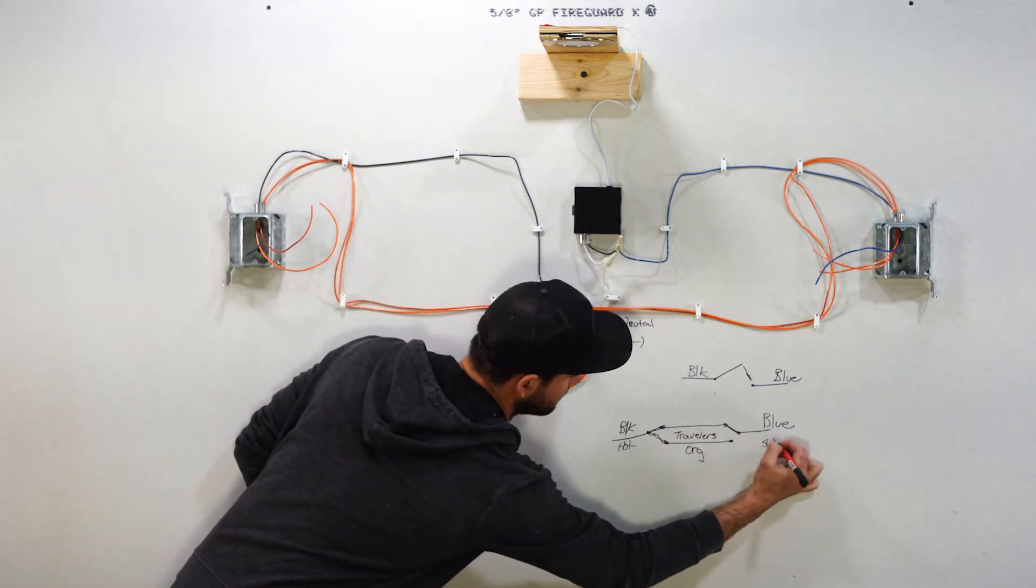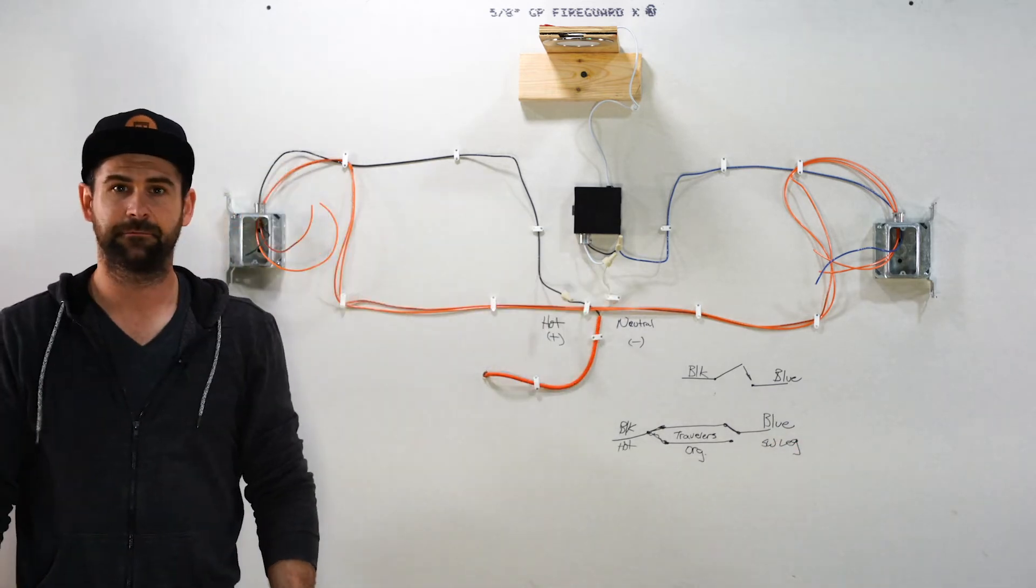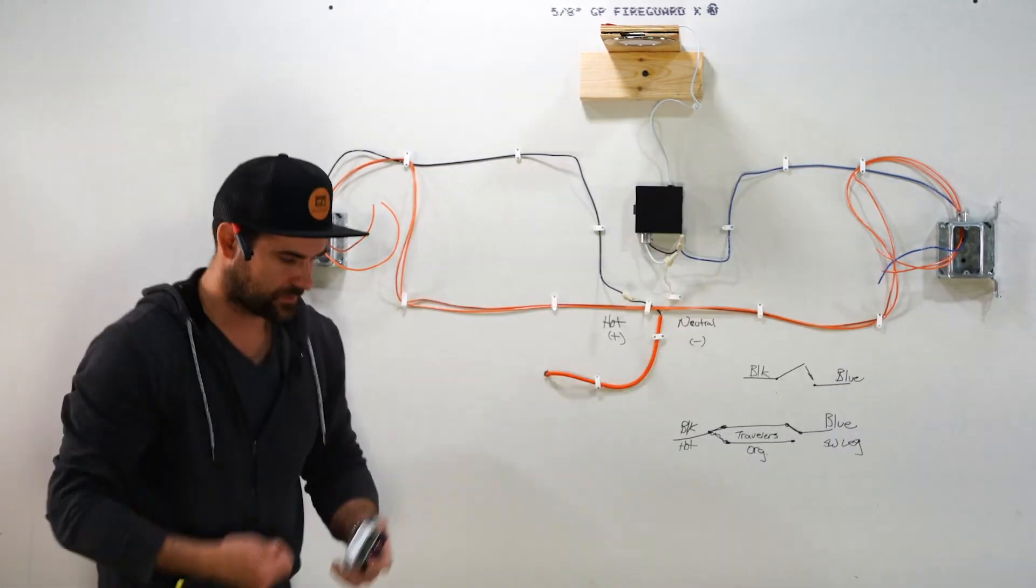So these are our travelers in orange, this is our hot, this is our switch leg. Make sense? Let me wire this up, I'll put the switches on.